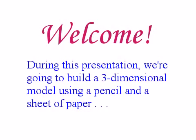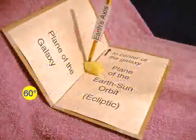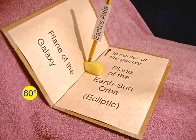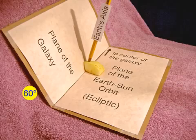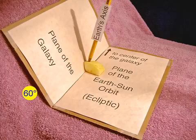Welcome. Thanks for joining us. During this presentation, we are going to build a three-dimensional model using a pencil and a sheet of paper to help you quickly understand the basic astronomy of 2012. Our model only contains three parts: the plane of the Earth-Sun orbit, the plane of the galaxy, and the axis of the Earth.